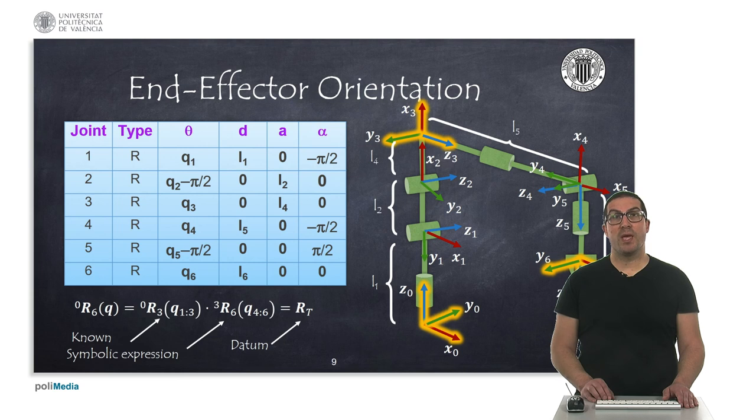Therefore, if R03 is known and RT, which is the target reference frame, this is a problem datum, that means that we can also compute the numeric values for the matrix R36. And therefore, comparing such matrix with the corresponding symbolic expressions will provide us the hints to get the values for the remainder of joints. We will see that.